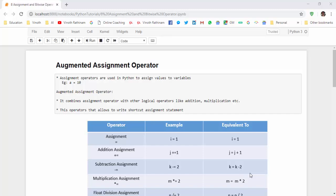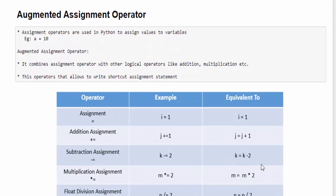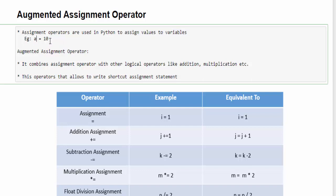Hello everyone, welcome to Vinod Rathenam Tutorials. In this video we are going to learn about assignment operators. What is an assignment operator? It is used to assign values to a variable. For example, a equal to 10. Here, equal to is the assignment operator which assigns the value 10 to variable a. We have already completed this concept in Python variable tutorials.